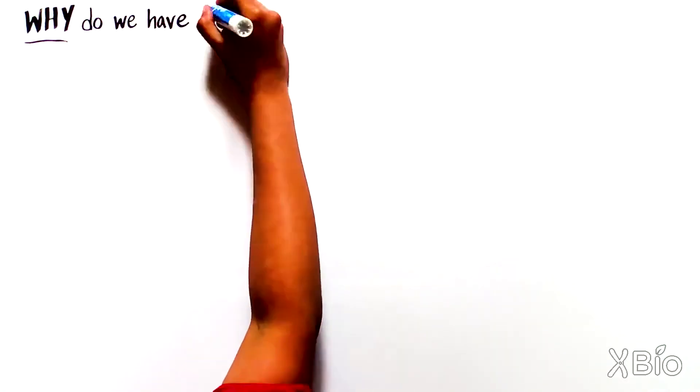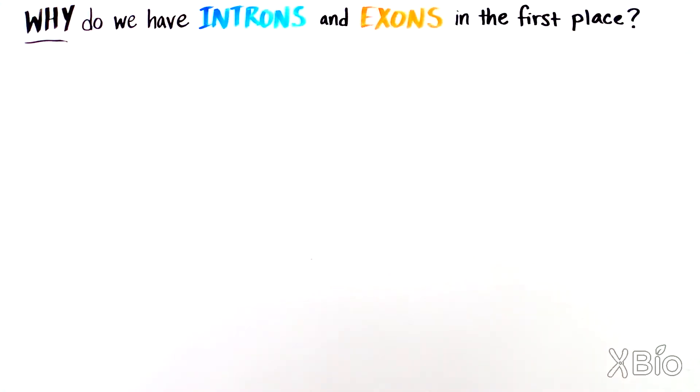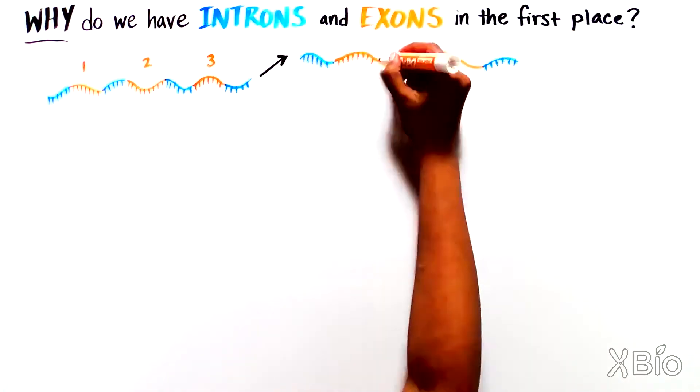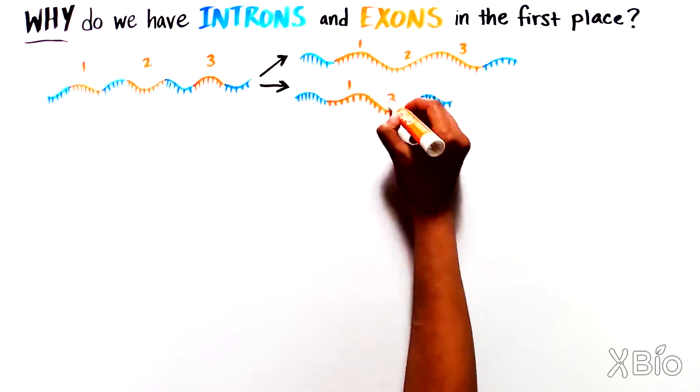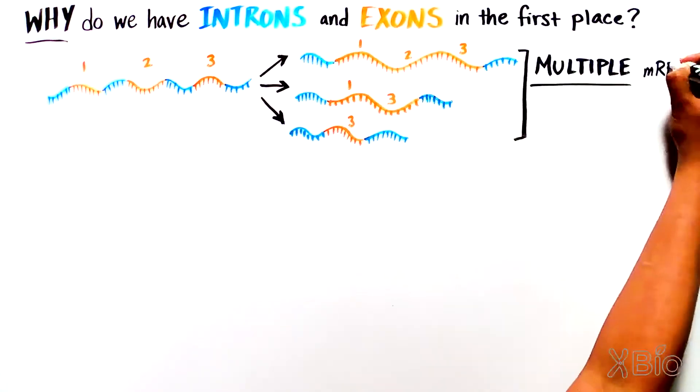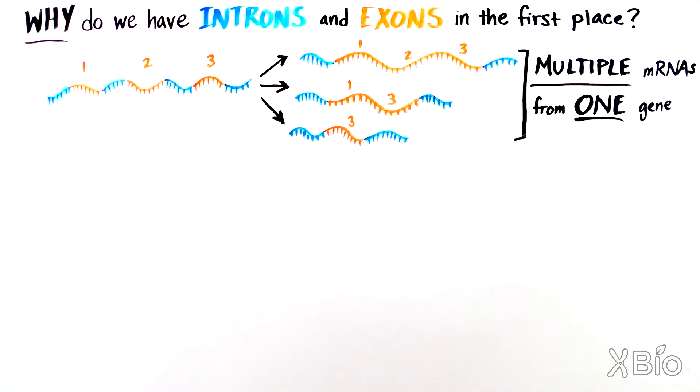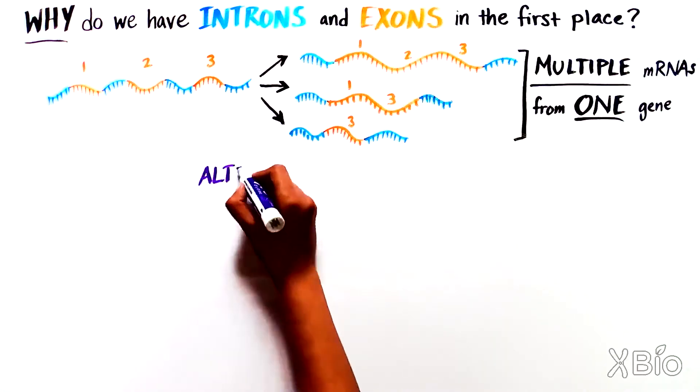Now that we know how splicing works, let's talk about why we even have introns and exons in the first place. One amazing feature of splicing is that cells can make multiple kinds of mRNA products from one gene, by including or excluding particular exons. This is called alternative splicing.